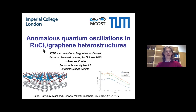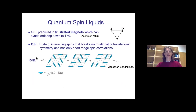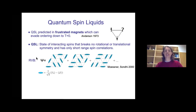Let me start with the broader motivation for this work. We want to understand and see these exotic magnetic states which are called quantum spin liquids. These have been conjectured to exist and appear in what's called frustrated magnets since many, many decades. Basically, instead of long-range magnetism, we would get a state that doesn't break any rotation or translation symmetries.